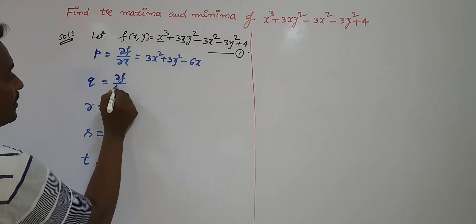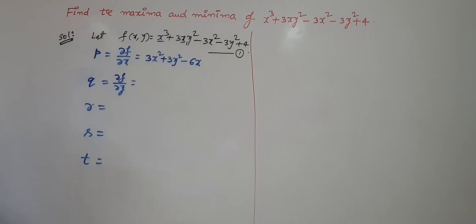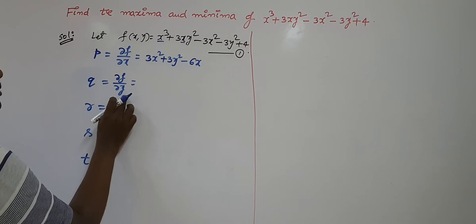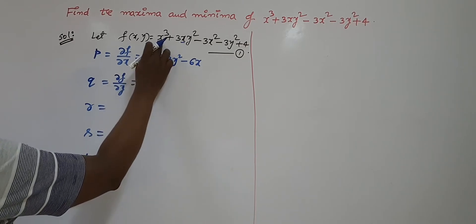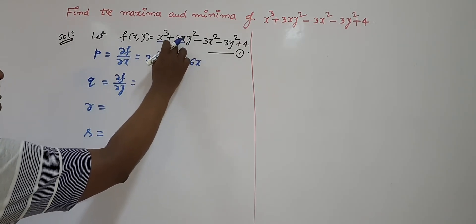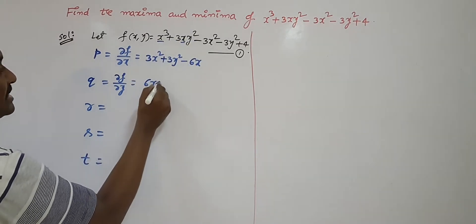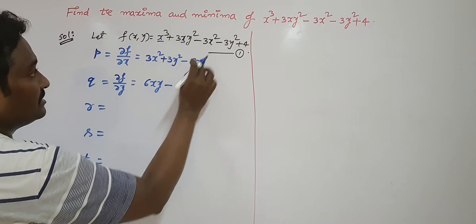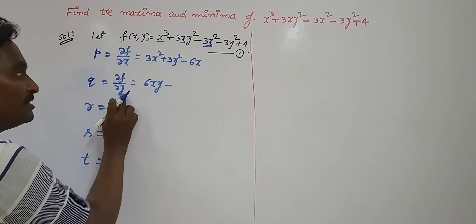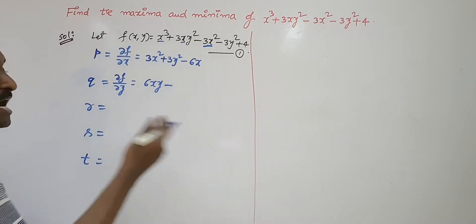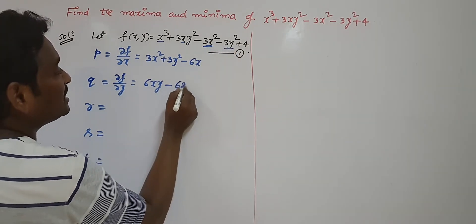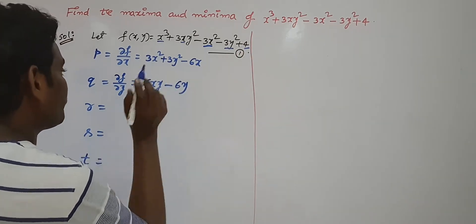Now q = ∂f/∂y. In this case, only y terms are variables; x terms are constant. So the partial derivative of x³ with respect to y is 0. The derivative of y² is 2y, and 3x is already there, so 3x·2y = 6xy. The term -3x² is entirely in x, so its partial derivative with respect to y is 0. The derivative of -3y² with respect to y is -6y. The partial derivative of 4 with respect to y is also 0.